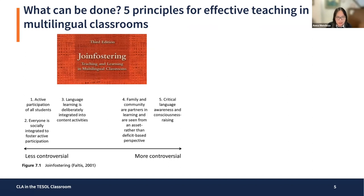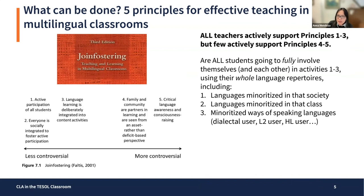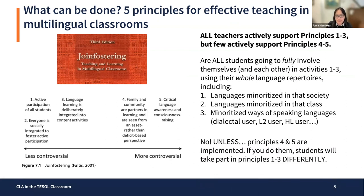I arranged Faltis' principles in a gamut. All teachers actively support principles one to three, but few actively support principles four to five. And I wonder: are all students going to fully involve themselves and each other in activities one to three using their whole language repertoires — including languages minoritized in that society, languages minoritized in the class, or minoritized ways of speaking, like dialectal, second language, or heritage language use? Obviously no, unless principles four and five are implemented. If you do them, I think students will take part in principles one to three differently.